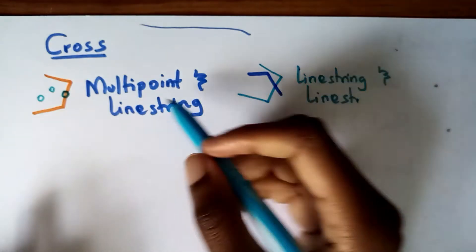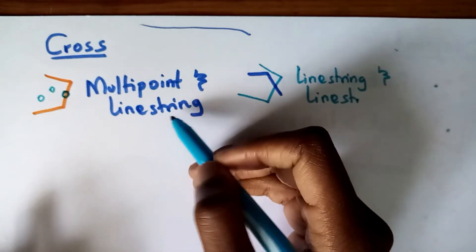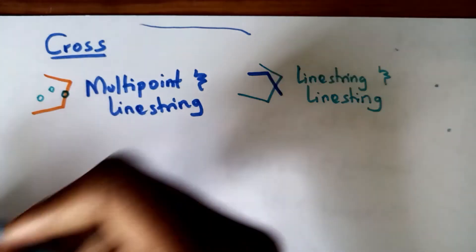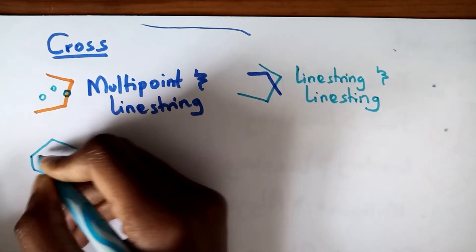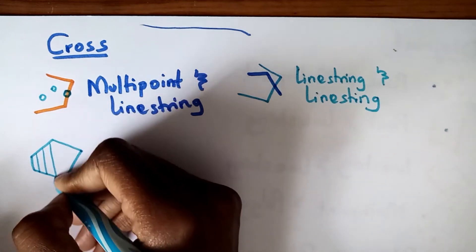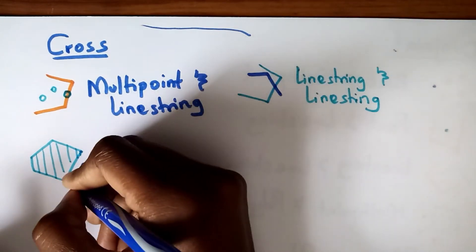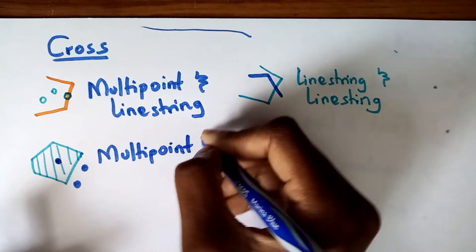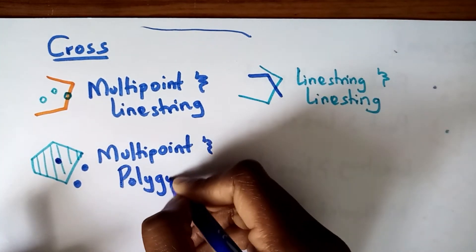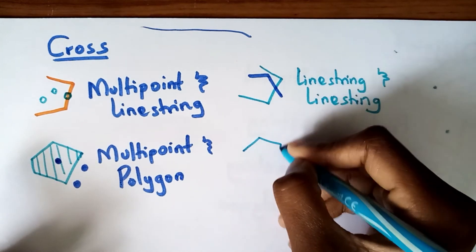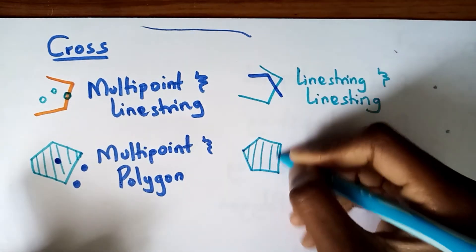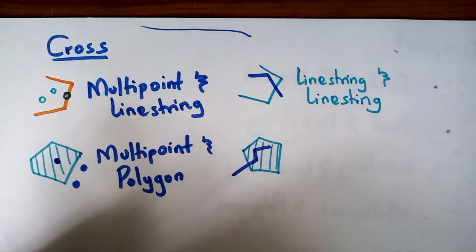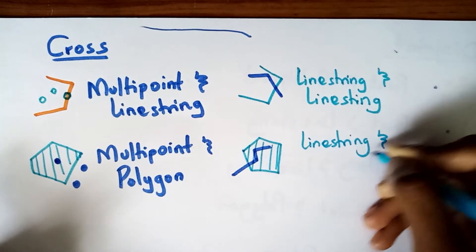Next, we can also test if geometries cross. If they cross, the dimension of the intersection is one less than the maximum dimension of the two source geometries, and the intersection set is interior to both source geometries. For example, a multipoint and a line string, or a multipoint and a polygon — at least one of the geometries crosses the other. We can have a line string and a polygon.